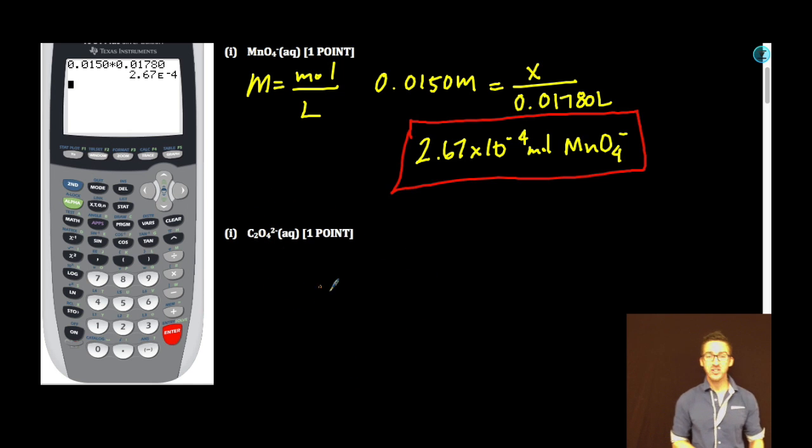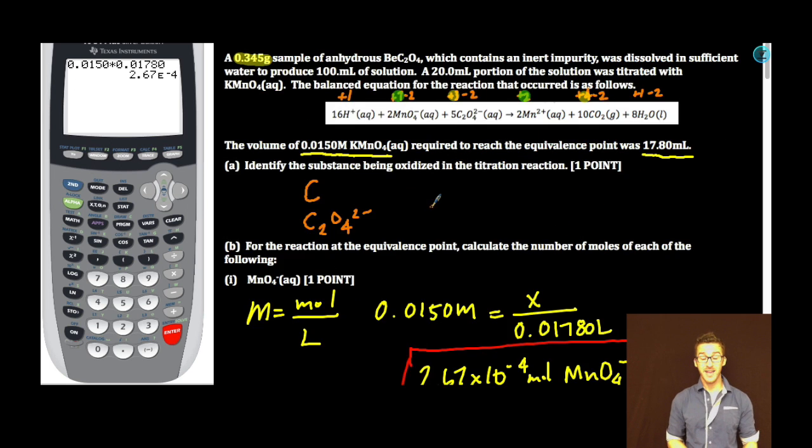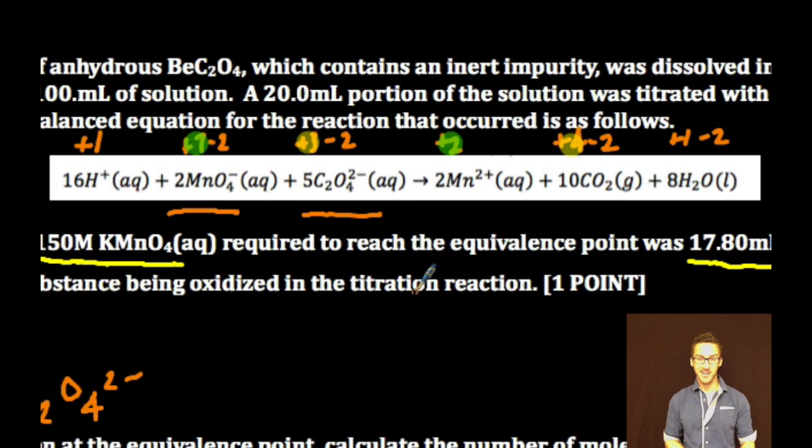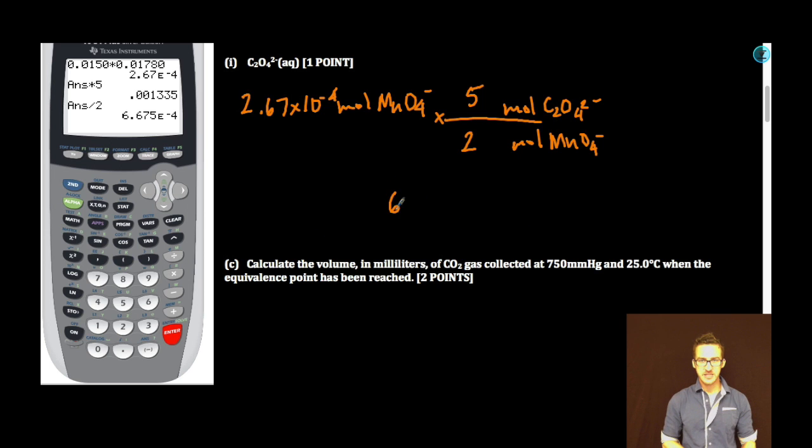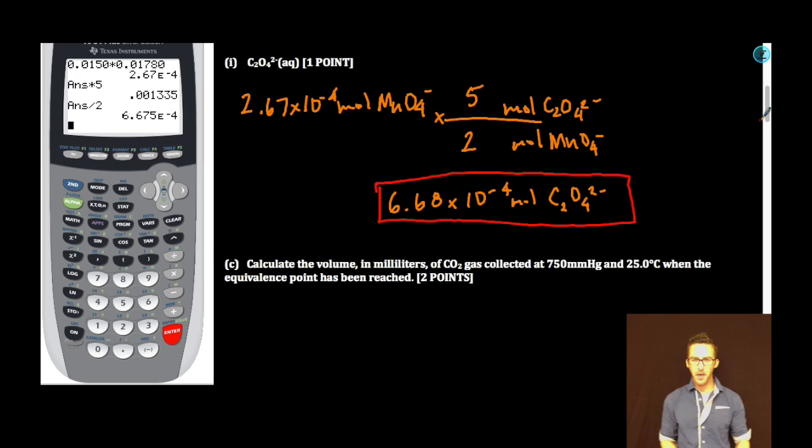Which brings us to B part II. We need moles of oxalate ion. We just determined the number of moles of permanganate. As I look at the equation provided, permanganate ion and the oxalate ion have a 2 to 5 relationship. So let's do some conversions. Every 2 moles of permanganate ion react with 5 moles of oxalate ion. Calculator time. That takes us to 6.68 times 10 to the minus 4 moles of oxalate ion.